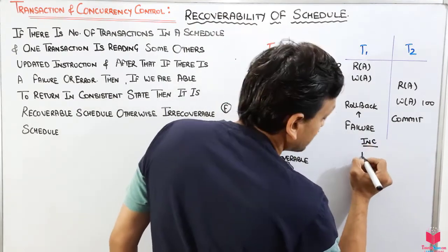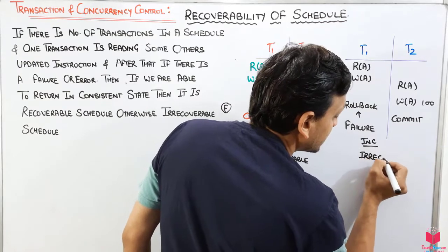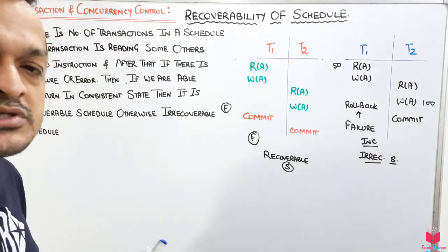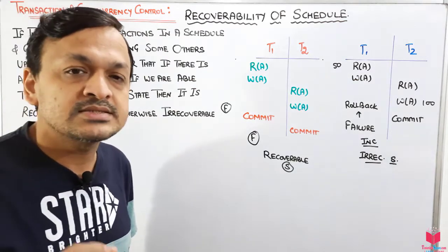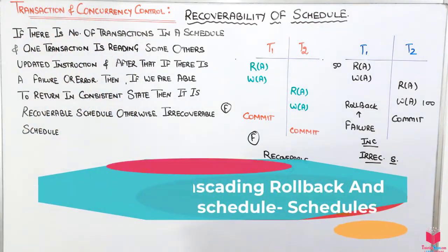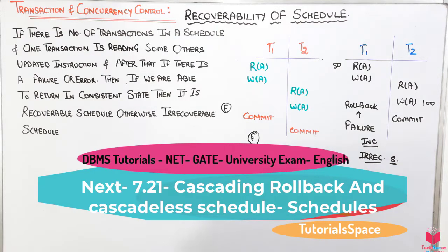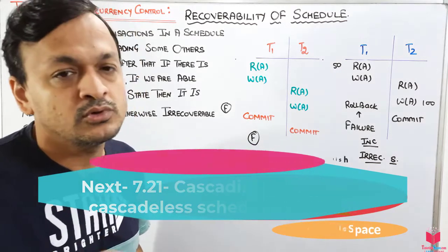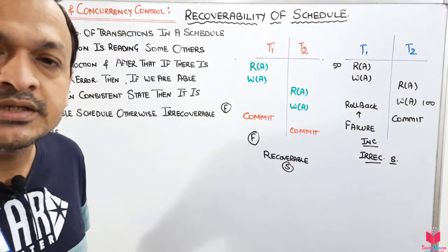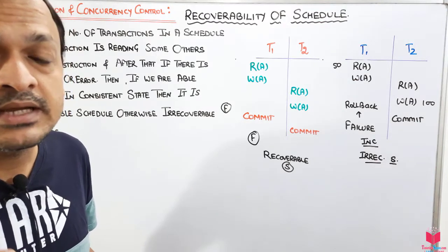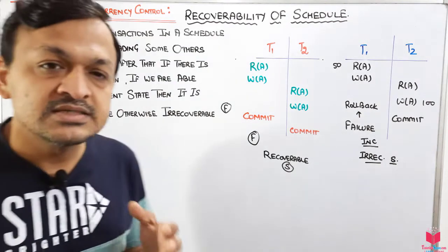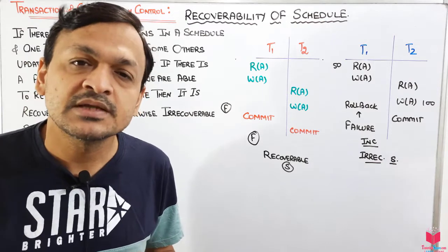That means this is an irrecoverable schedule. So those are the recoverable and irrecoverable schedules. In the next video we will discuss cascadeless schedules and the cascade rollback problem. Please subscribe, like, and share this video. Thank you.